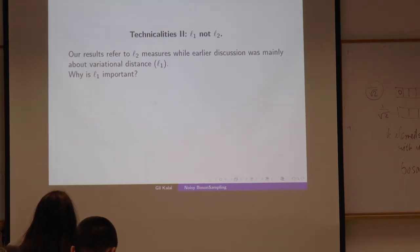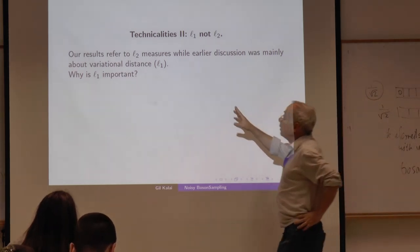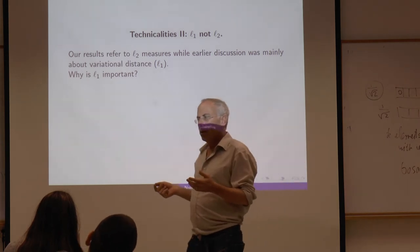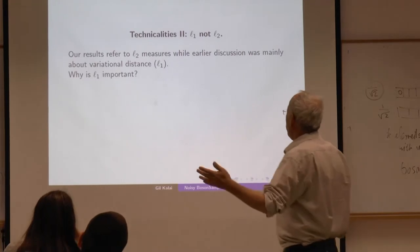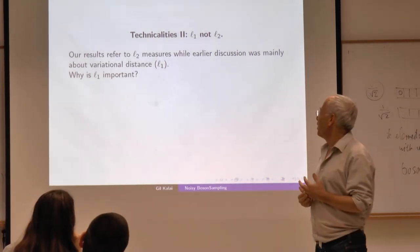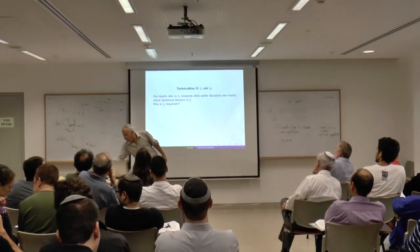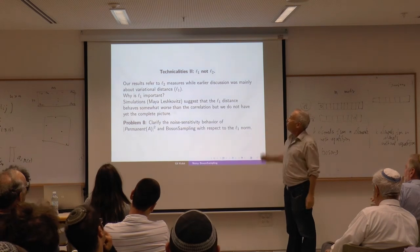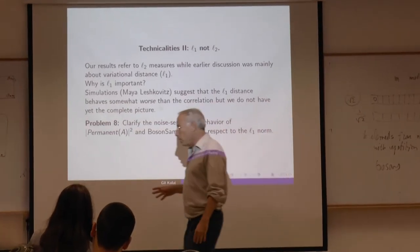The second technicality is that we deal with L² and not L¹. The papers usually deal with variational distance, L¹. The problem is to clarify the noise sensitivity behavior of |permanent(A)|² with respect to L¹. We did some simulations and it looks like the L¹ distance behaves somewhat worse than the correlation, but we don't have the complete picture.